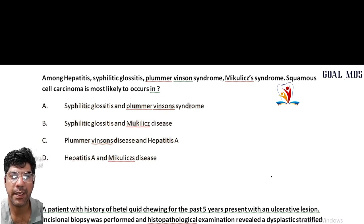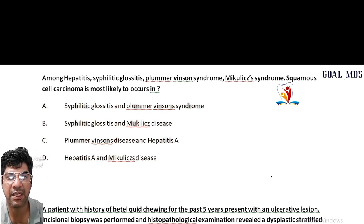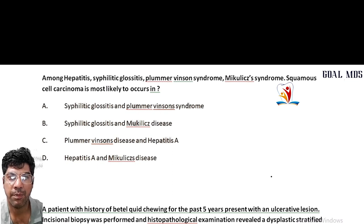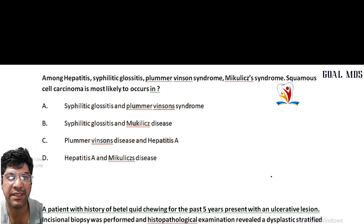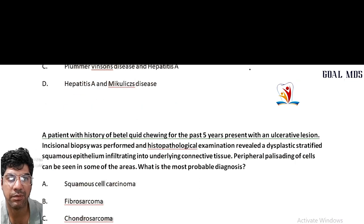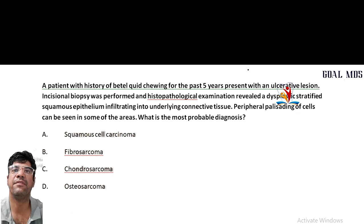Among conditions associated with squamous cell carcinoma: syphilitic glossitis and Plummer-Vinson syndrome are associated with chronic irritation and inflammation of the oral cavity, leading to an increased risk of squamous cell carcinoma. The answer is syphilitic glossitis and Plummer-Vinson syndrome.